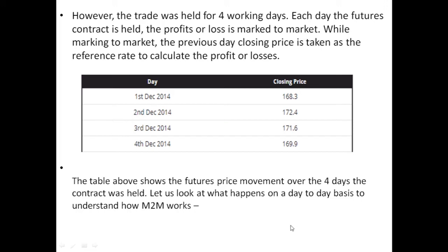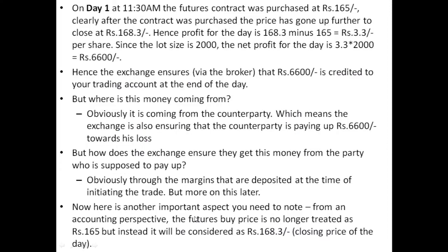The table above shows the futures price movement over the four days the contract was held. Let us look at what happened on a day-to-day basis to understand how M2M works. On Day 1 at 11:30 AM, the futures contract was purchased at ₹165. After the contract was purchased, the price went up to close at ₹168.3. Hence the profit for the day is 168.3 − 165 = ₹3.30 per share. Since the lot size is 2000, the net profit of the day is 3.30 × 2000 = ₹6,600. The exchange ensures, via the broker, that ₹6,600 is credited to your trading account at the end of the day.